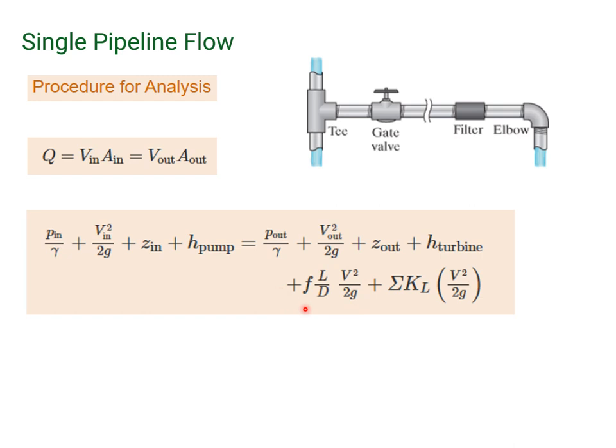We have the major friction losses and the minor friction losses. We have to go through the section of pipe and add up the sum of K sub L. We'll have one of these terms for the tee, one for the gate valve, one for the filter, and one for the elbow. You'll have numerous minor losses to contend with.